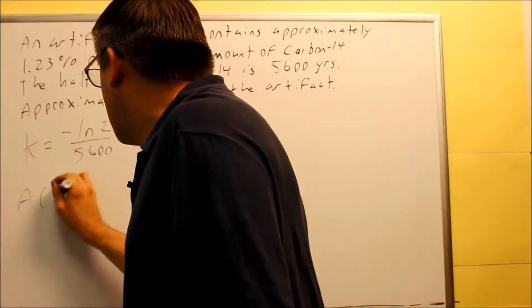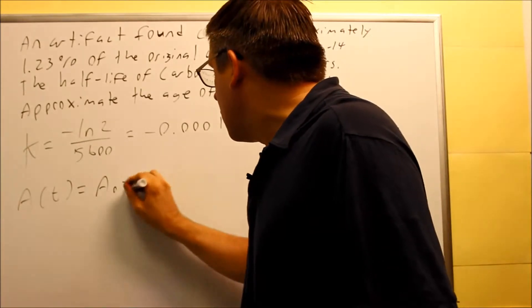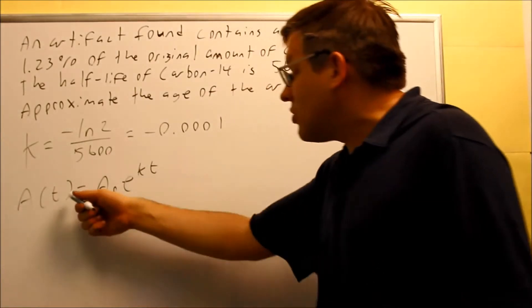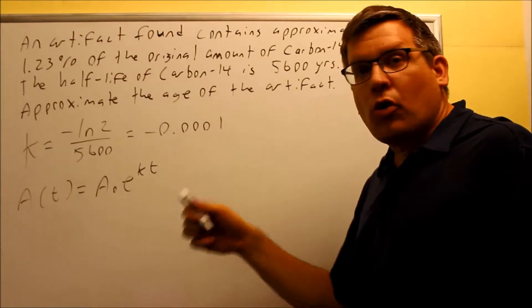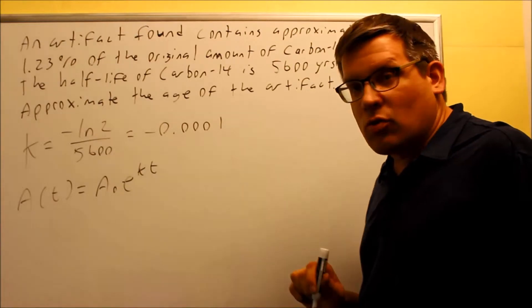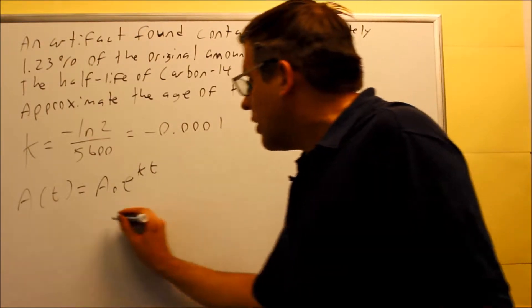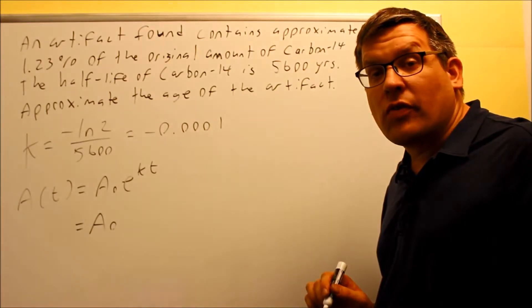We still have our same formula we've been using throughout this whole section. We have A(t) = A₀e^(kt). This is the same formula for both growth and decay we've been talking about before, and we're going to use it on this one. Now, information that we're provided, we don't know the initial amount that we're starting with, so we're going to leave that as A₀.